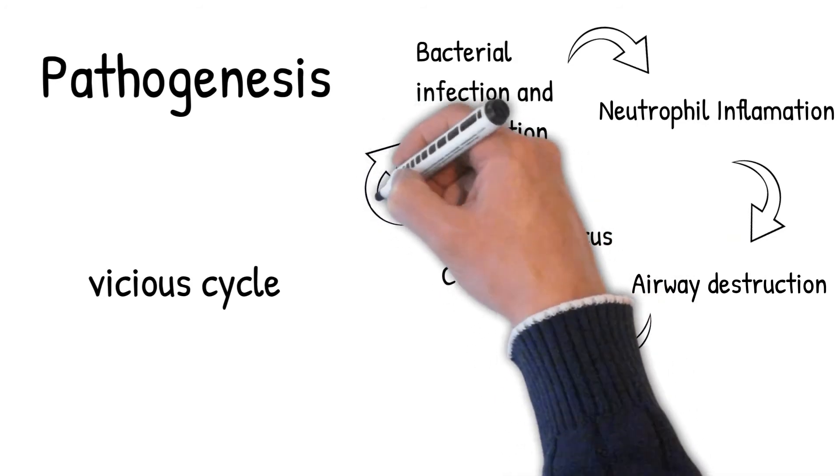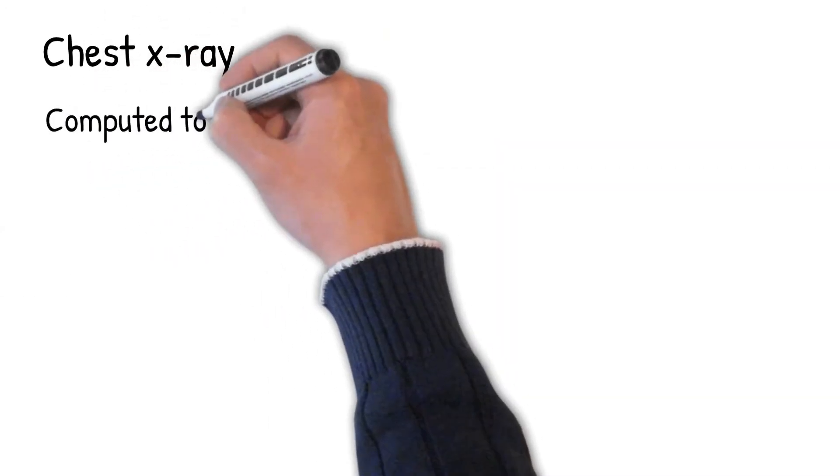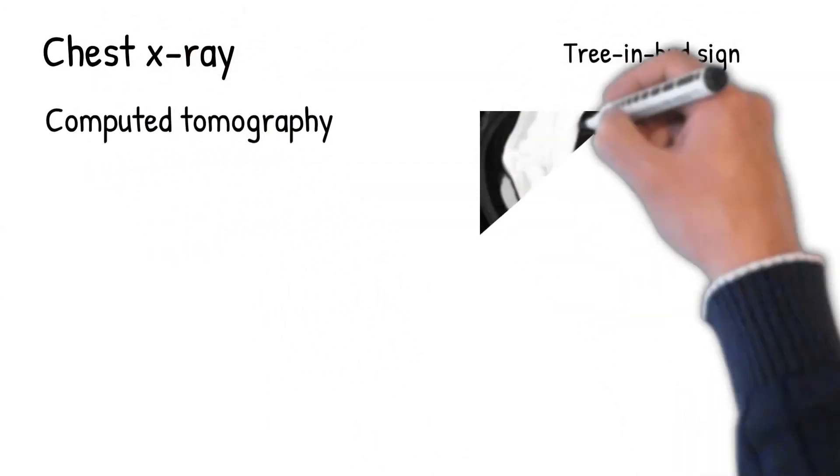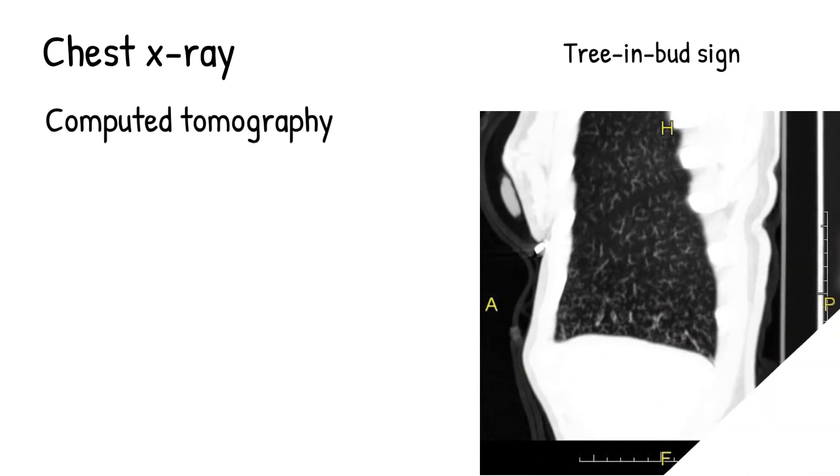Diagnosis: A chest x-ray is abnormal in most patients with bronchiectasis. Computed tomography is recommended to confirm the diagnosis.